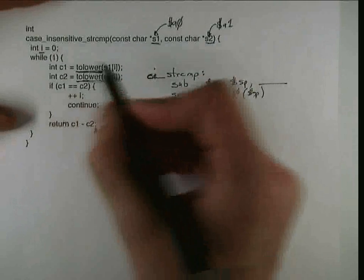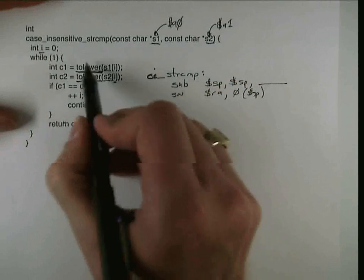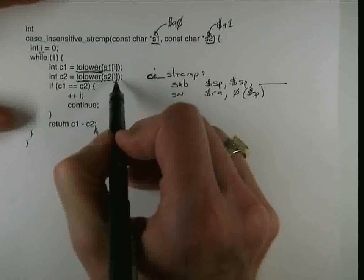Furthermore, the variable I is defined on one side of tolower and it's used on the other side. And so that's going to need to be saved.